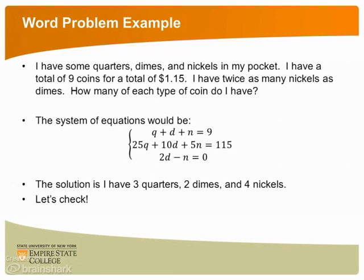The word problem gives a whole extra layer of difficulty. First, we have to figure out exactly what our system would look like. Since we have quarters, dimes, and nickels, we will let q represent the number of quarters, d the number of dimes, and n the number of nickels. The first equation we can form is that q plus d plus n equals 9, since we have a total of 9 coins.